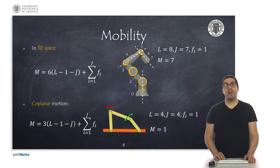In the case of a coplanar motion, the mobility formula is limited to a maximum of three degrees of freedom per link.